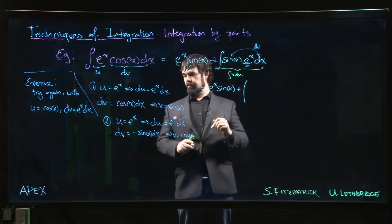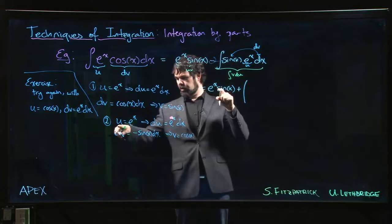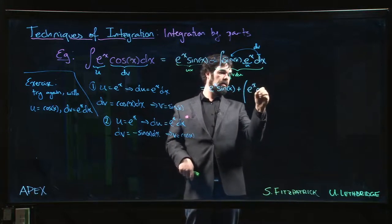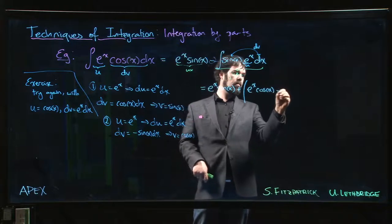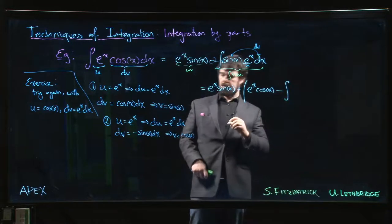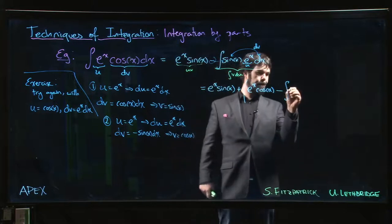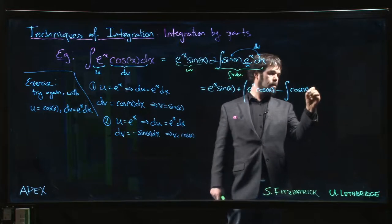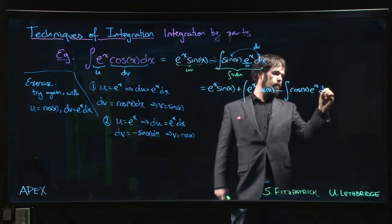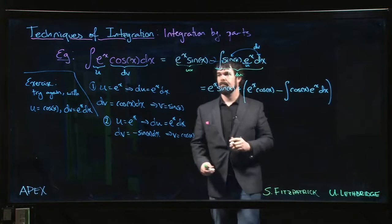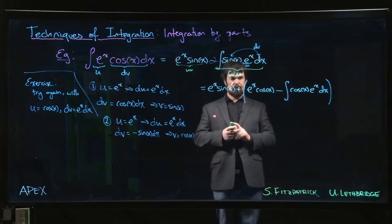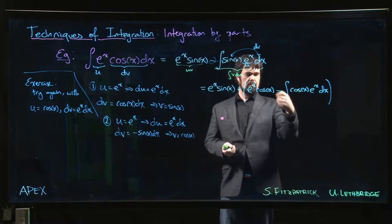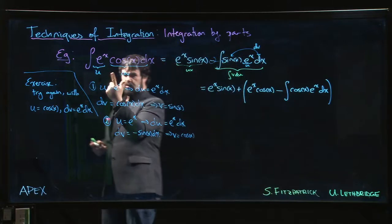Alright, so we get, we're going to replace this integral with, now we do u times v again, so e to the x cos x minus integral v du. Okay, so now we get to here and we're like, wait a sec, wait a sec. That's what we had there, right?